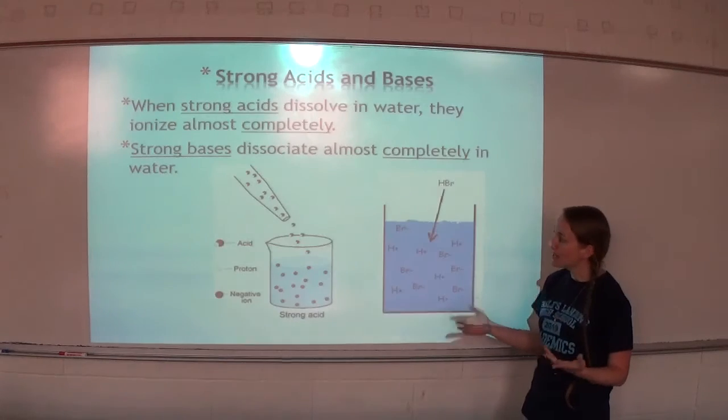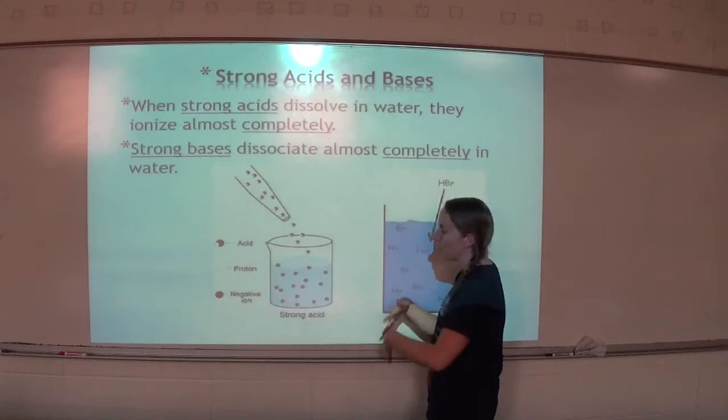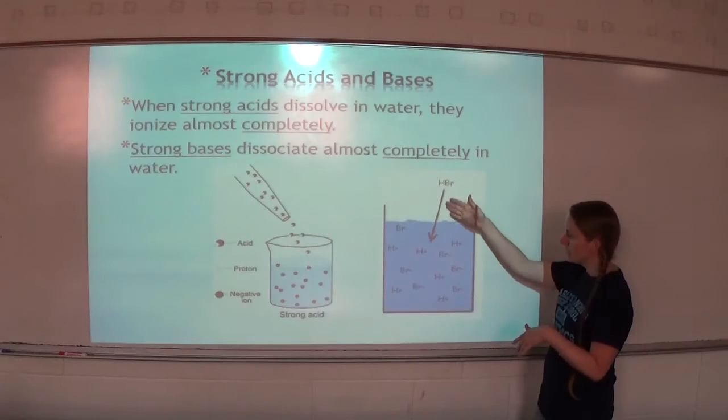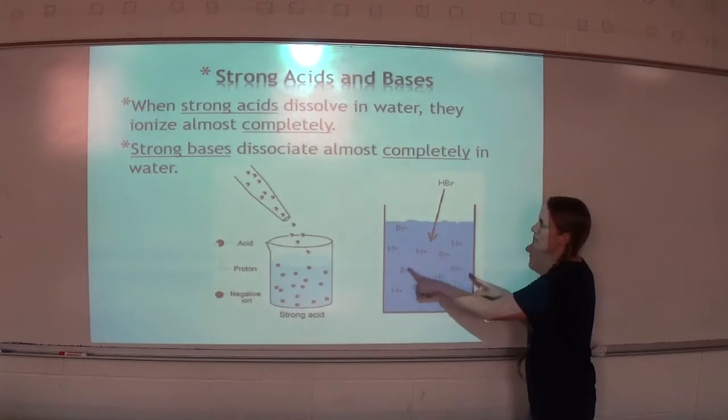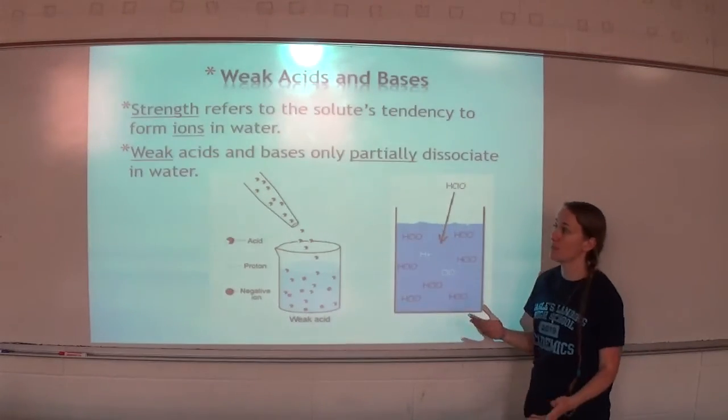So if you look here, it has one white and one red. And if you look down here, all of them are breaking apart. Same thing here. We have HBr, and once it's in water, almost all of them are breaking apart. So those indicate strong acids or bases.